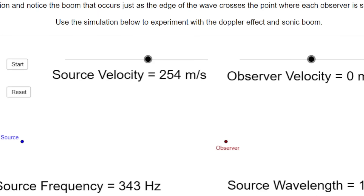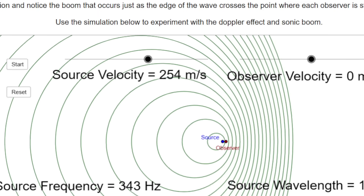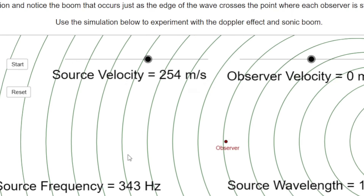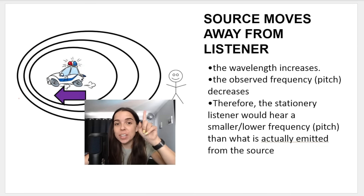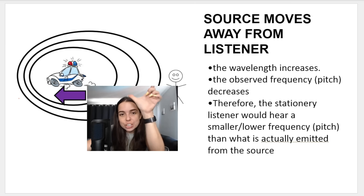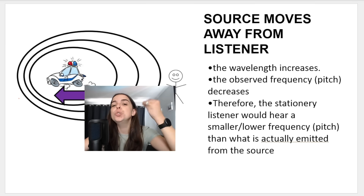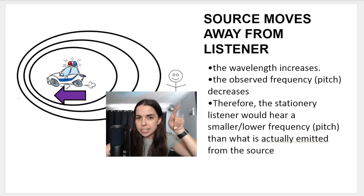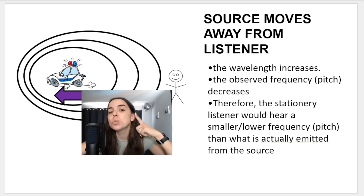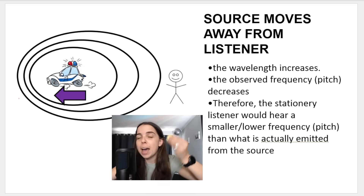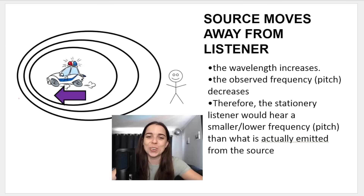What about when the source moves away from the observer? As the source moves away, the wavelengths at the back increase — they stretch out. Wavelength increases, which means the observed frequency decreases, which means pitch decreases. And that's why when the ambulance moves away from you, you hear that lower-pitched noise instead of the high-pitched noise.